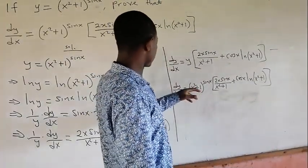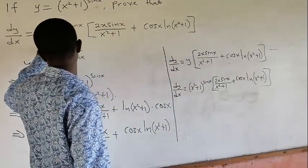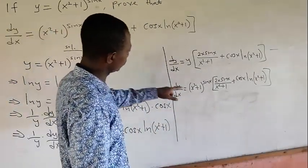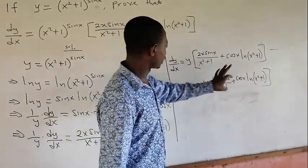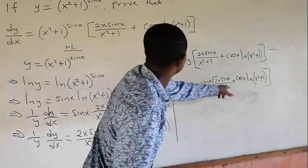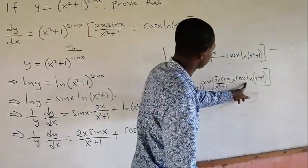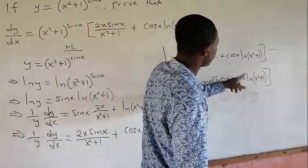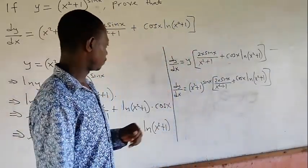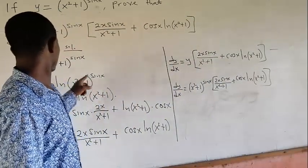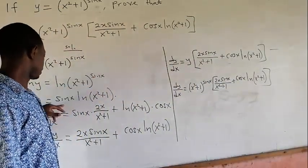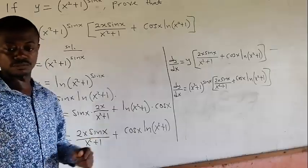Now let's do a comparison. We have x squared plus 1 to the power sin x, times 2x sin x over x squared plus 1 plus cos x times ln(x squared plus 1). That matches what we were required to prove, so the proof is complete. Thanks for watching.